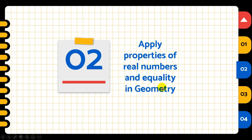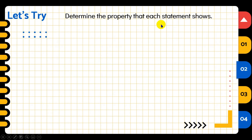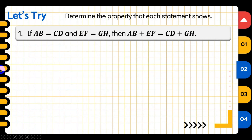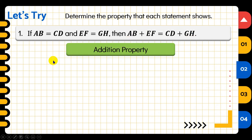Now let's apply these properties in geometry. We'll determine the property each statement shows. Number one: if line segment AB equals CD and line segment EF equals GH, then AB plus EF equals CD plus GH. Since we have addition on both sides of the equation, this is the addition property of equality. Number two: if line segment AB equals CD, then CD equals AB — the positions are interchanged but they remain equal, so this is the symmetric property.